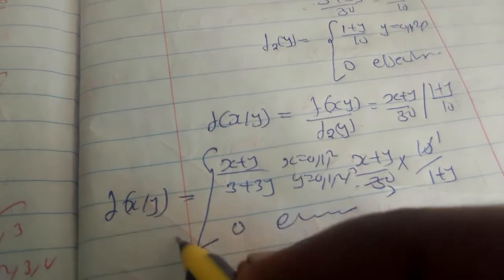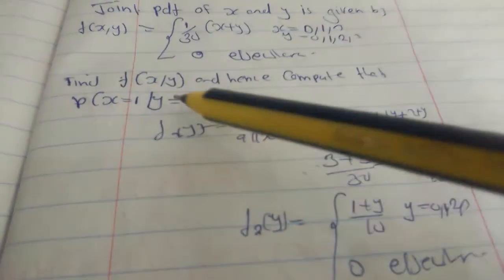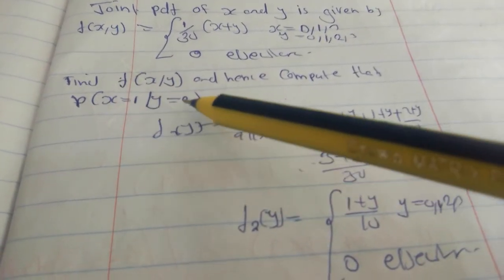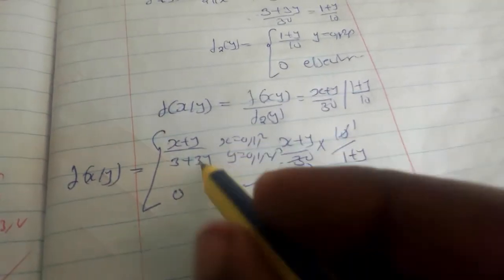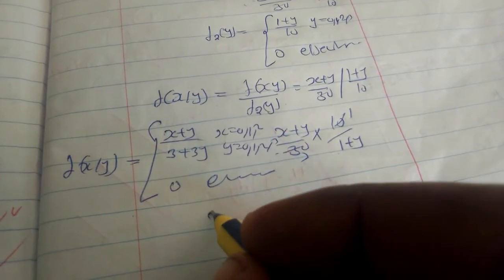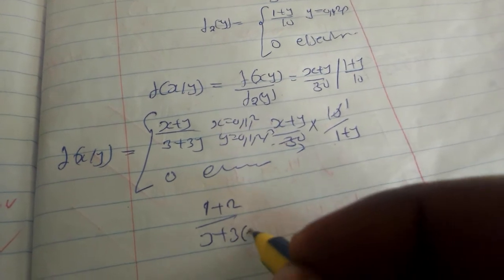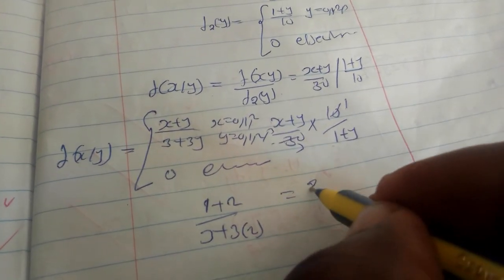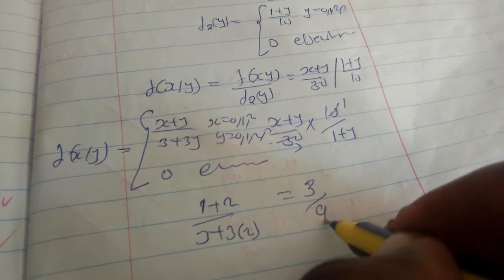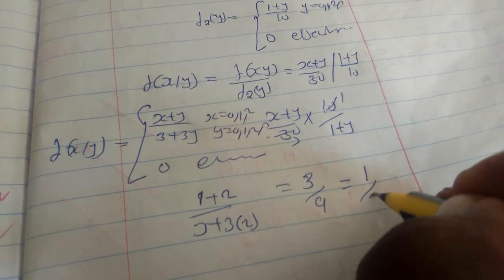This is the function of x given y. So we come to number 2. Compute P(x equal to 1 and y equal to 2). When you substitute here, you are going to get 1 plus 2 over 3 plus 3 times 2. So you are going to get 3 over 9, which is equal to 1 over 3.